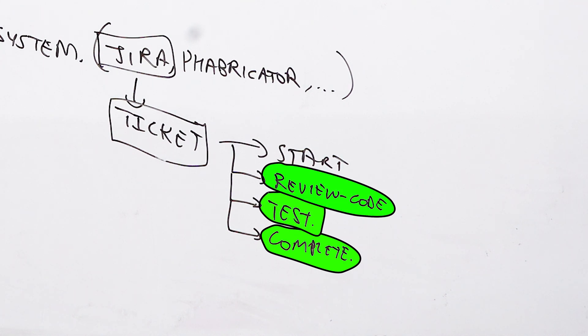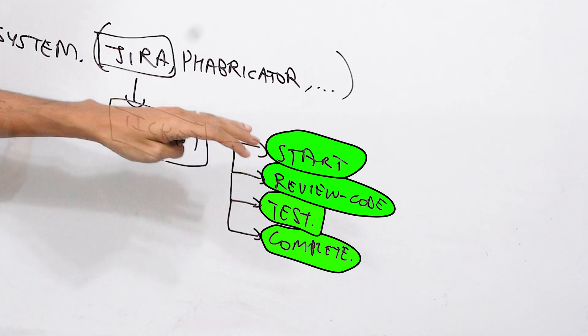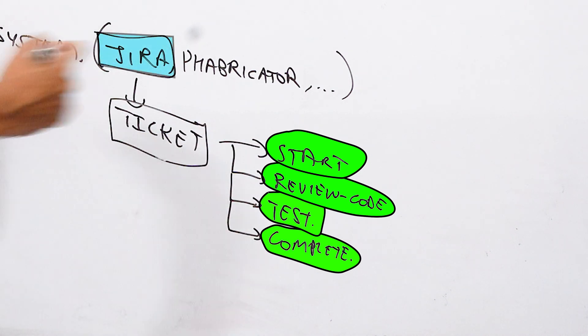I'm getting the ticket reviewed so I'm getting the code reviewed. That will be one status of the ticket. It's a state management or lifecycle system. That's what Jira provides you.